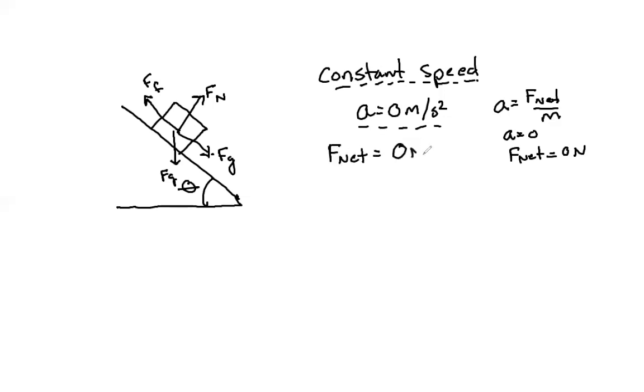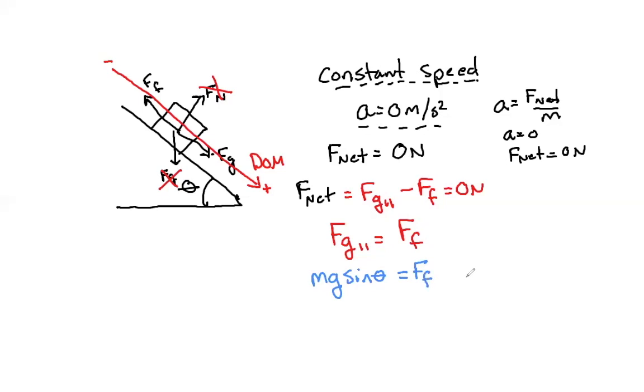F net in the DOM has to be equal to zero newtons. In the direction of motion, we have FG parallel minus FF, and because this is all equal to zero newtons, FG parallel is just equal to the force of friction. That is incredible because mg sine theta equals the force of friction, which is also equal to mu mg cosine theta.